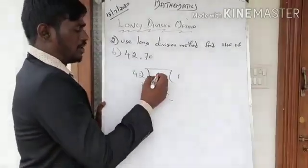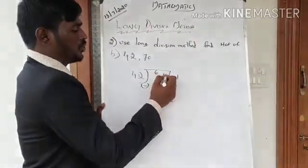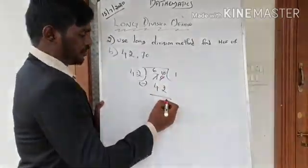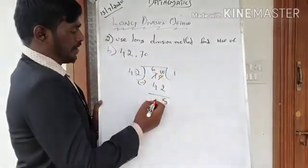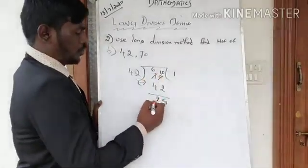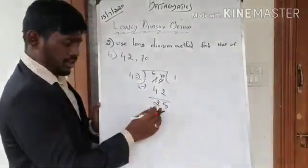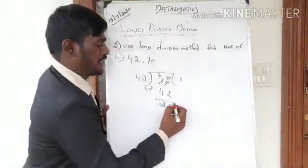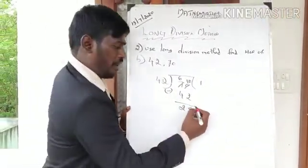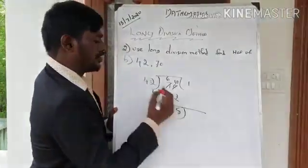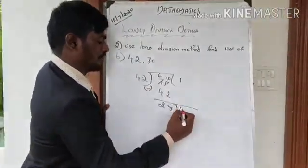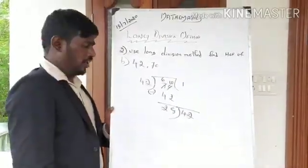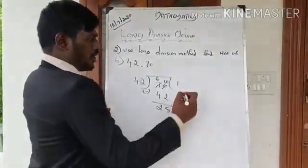Subtract 70 minus 42. We get a borrow: 10 minus 2 is 8, 6 minus 4 is 2. The remainder is 28. This remainder 28 now becomes the new divisor, and 42 becomes the new dividend.